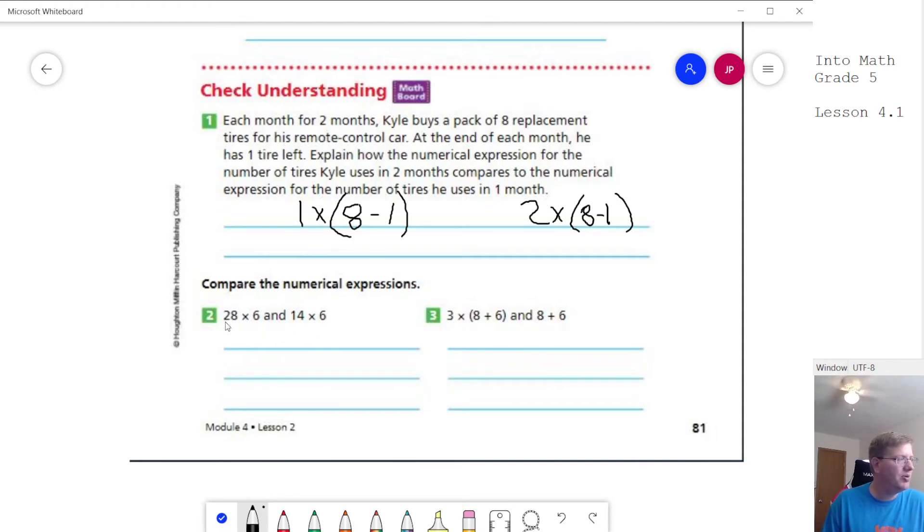For number two, we are working with 28 times 6 and 14 times 6. If I look at both of those, both of my sixes are the same. What's our relationship between 14 and 28? Pause and think about it for a second. If we look at these two numbers, they're doubles. So we could do 14 plus 14. So this side is twice as many as our right-hand side.